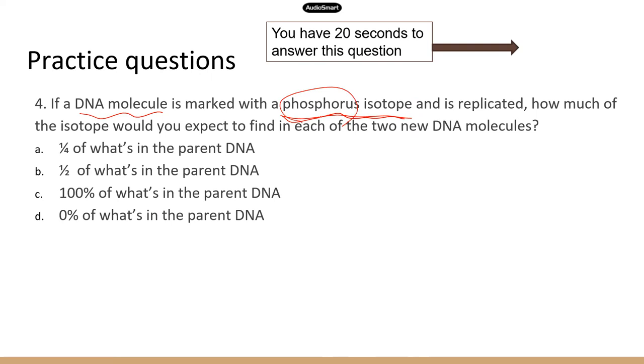Why we use a phosphorus isotope? Remember, one of the three components in each nucleotide is a phosphate. So you can use a phosphorus isotope to mark the parent DNA and see how much isotope you end up with in each of the new DNA molecules. Now, because each new DNA has half of the parent DNA, you would expect to see half of the marked isotope in each of the new DNA molecules. So correct answer is B.